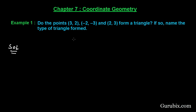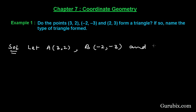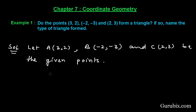First of all we shall name these points. Let A = (3,2), B = (-2,-3), and C = (2,3) be the given points. Now we shall find the distance between these points.